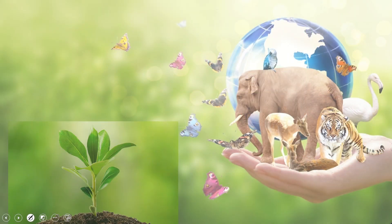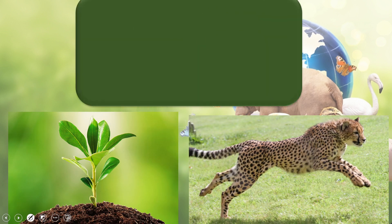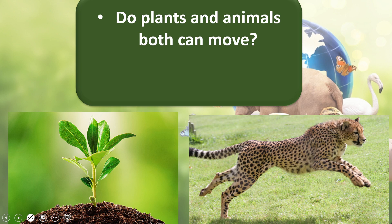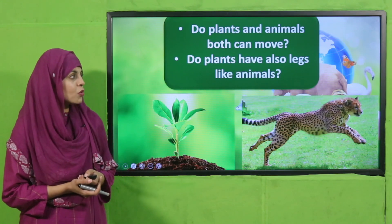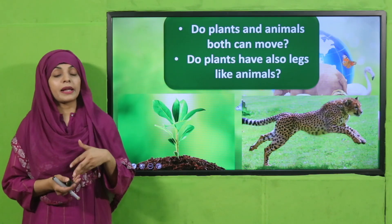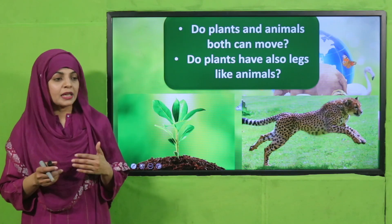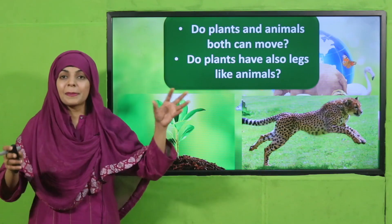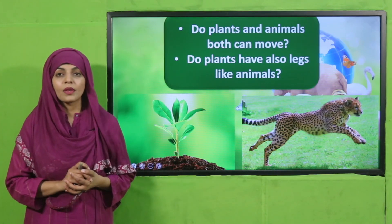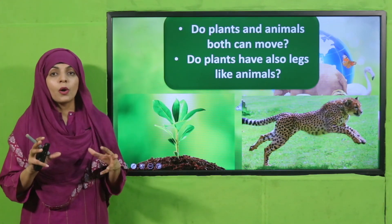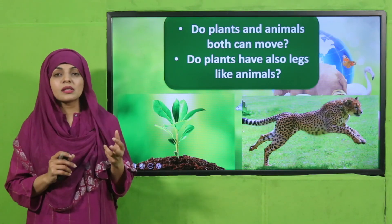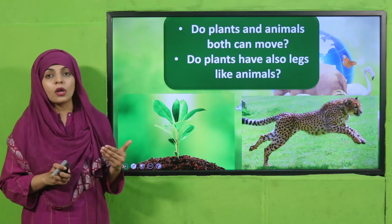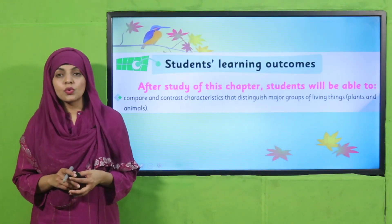Let's quickly move forward towards an activity. Look at the pictures and answer these questions: do plants and animals both move? Of course both can move. Now tell me, do plants also have legs like animals? Of course not — plants move when they grow, and they also move with the direction of the sun. This is how plants move, and that is why we call plants living things.